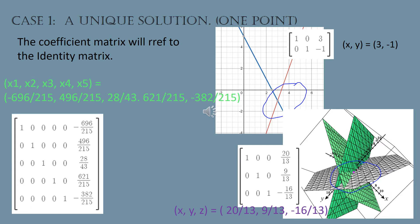We have a few examples here. Our first example is a two-by-two system — two variables and two equations. When we RREF the system, the coefficient matrix turns into the two-by-two identity matrix. We then read that result as: one times x plus zero times y equals three, or x equals three. The second row is read zero times x plus one times y equals negative one, or y equals negative one. So the two lines cross in only the point (3, -1).